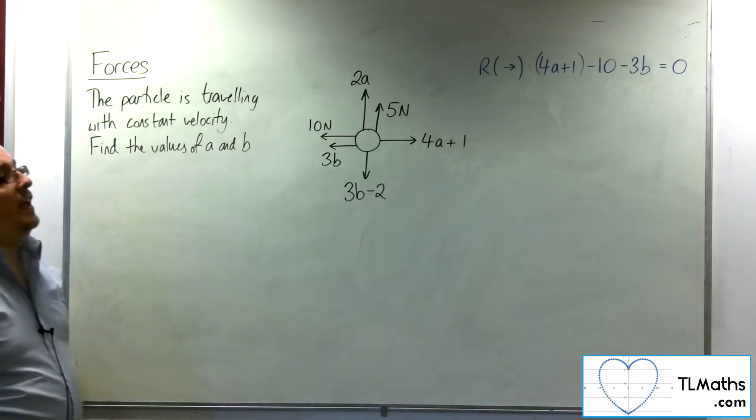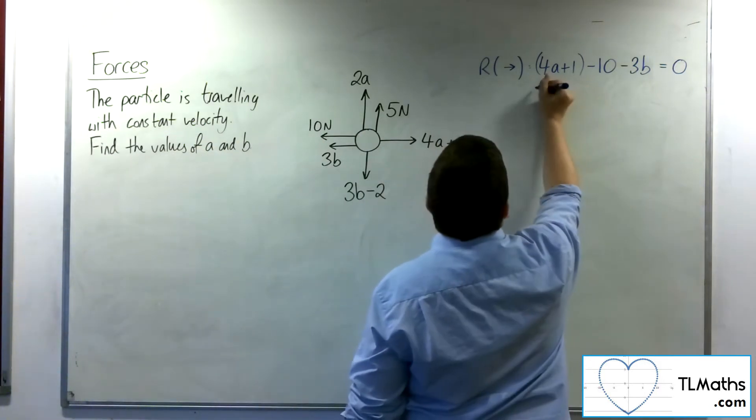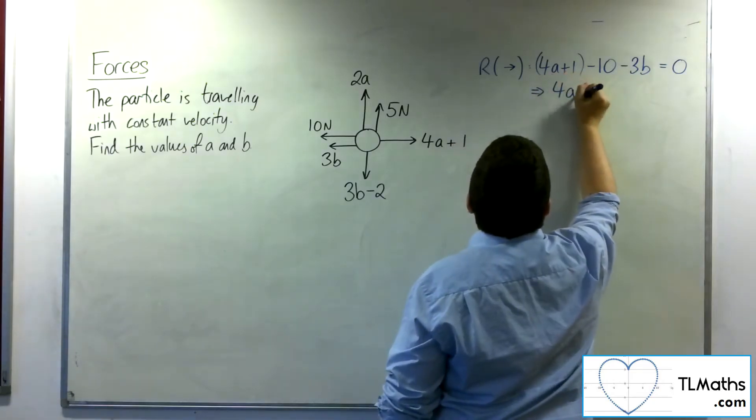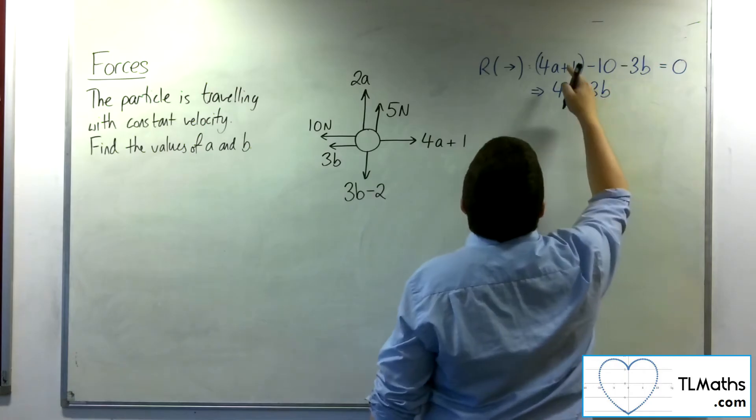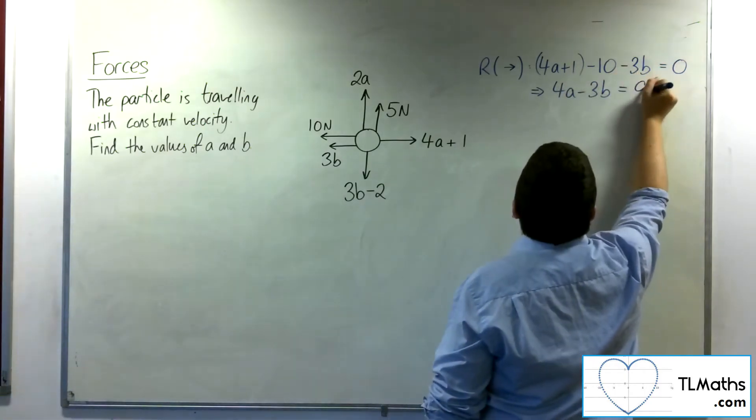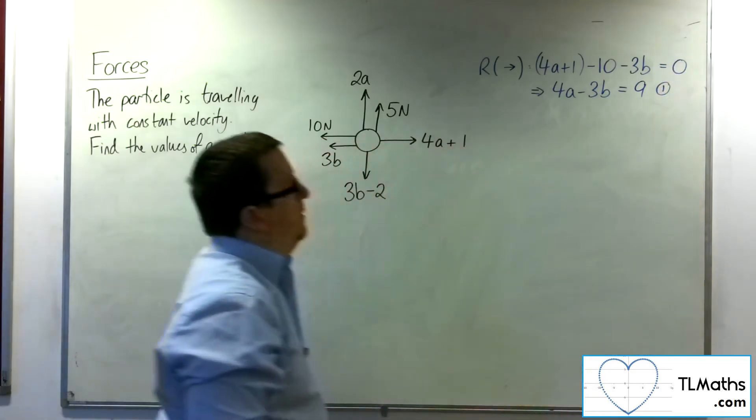So this sets up one equation. I'm going to rewrite that. So I've got 4A minus 3B. I've got the 1, take away 10, so minus 9. Add the 9 to both sides. And so I've got 4A minus 3B is 9. And that can be equation number 1.